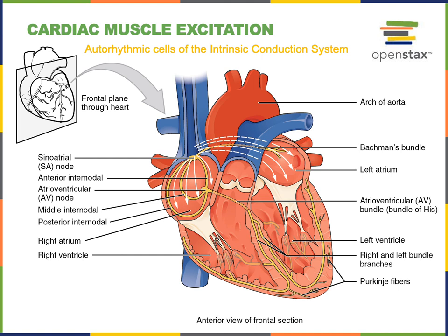Cardiac muscle differs from skeletal muscle in that cardiac muscle is stimulated or excited by autorhythmic cells located within the heart. These autorhythmic cells spontaneously depolarize, producing an action potential that then spreads through the rest of the cardiac muscle tissue through the other cells known as the contractile cells. There are two major types of heart muscle cells, or cardiomyocytes.